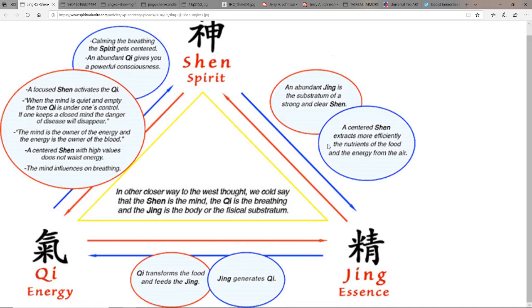Qi transforms the food and feeds the jing. Jing generates qi. A centered shen extracts more efficiently the nutrients of the food and the energy from the air. An abundant jing is the substratum of a strong and clear shen.